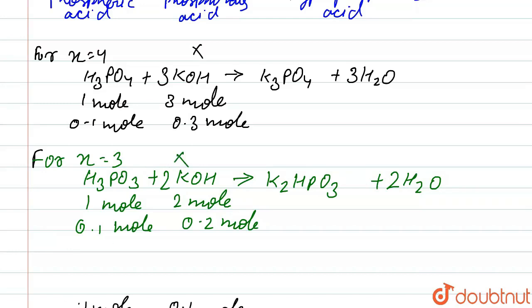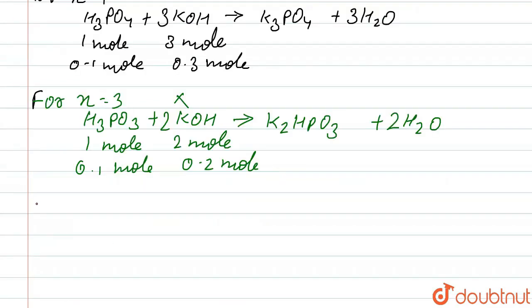Our next condition is for x equal to 2. Now the reaction is H3PO2 reacts with KOH, it gives KH2PO2.